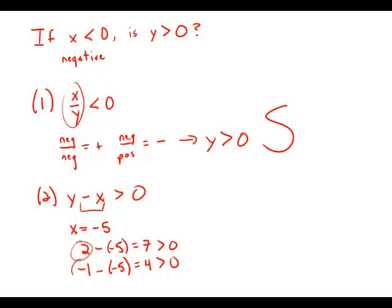So y could be either positive or negative. Because y could be positive or negative, this statement does not allow us to determine uniquely an answer to the question. So this statement is insufficient. Statement number 1 is sufficient. Statement number 2 is insufficient. Answer choice A.